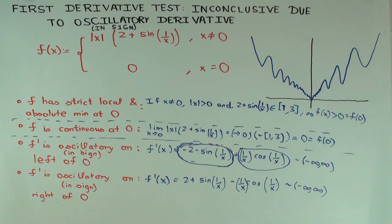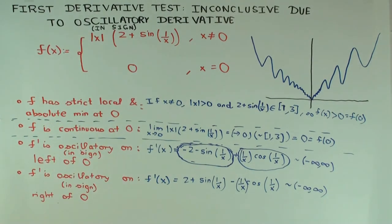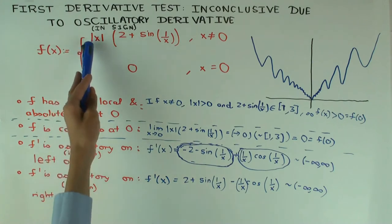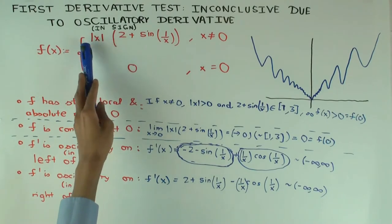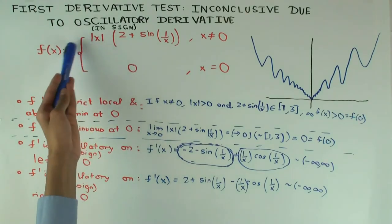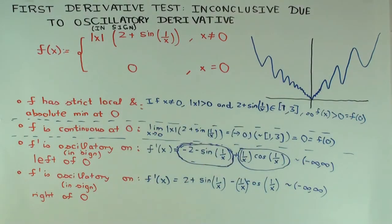You can also use this to construct an example with a local maximum with the same type of situation — just put a negative sign in front of the expression. If you want a situation where it's a maximum from the left and minimum from the right, you can remove the absolute value sign and then put a plus or minus. That gives you max from left, min from right, max from right, min from left, and various combinations like that.